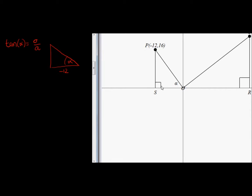Negative 12 is the x distance, and the height or the y distance is 16, which means I have opposite and I have adjacent. I can easily calculate the hypotenuse. So opposite is 16, adjacent is negative 12.